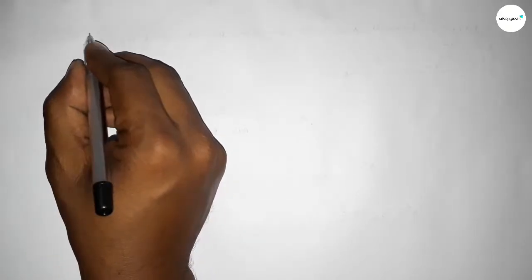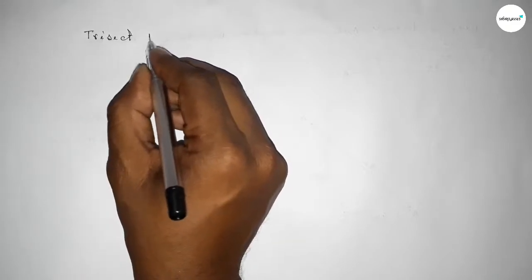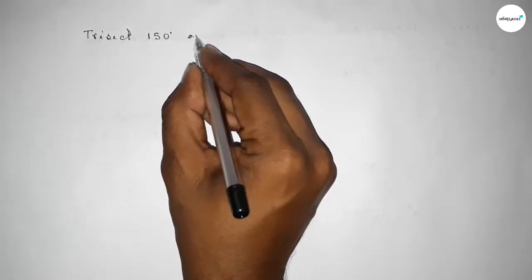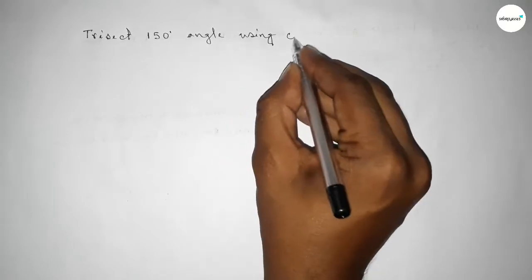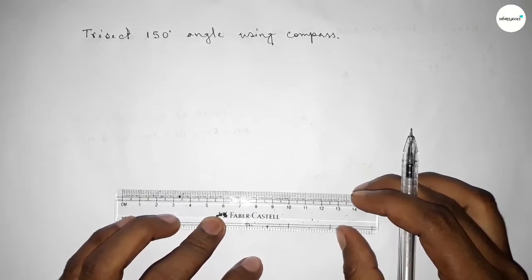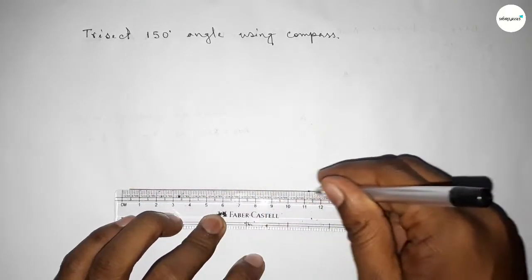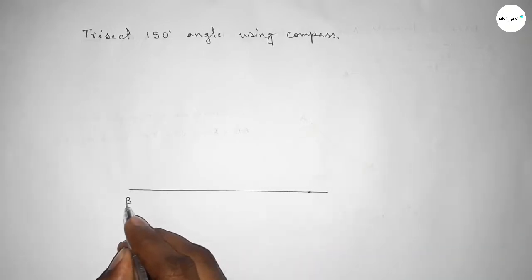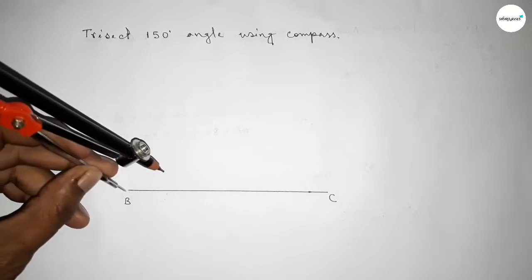Hi everyone, welcome to SSR Classes. Today in this video we have to trisect a 150-degree angle by using a compass. Let's start the video. First of all, we have to draw a line of any length, taking point B here and point C here. Now we have to draw a 150-degree angle at point B.